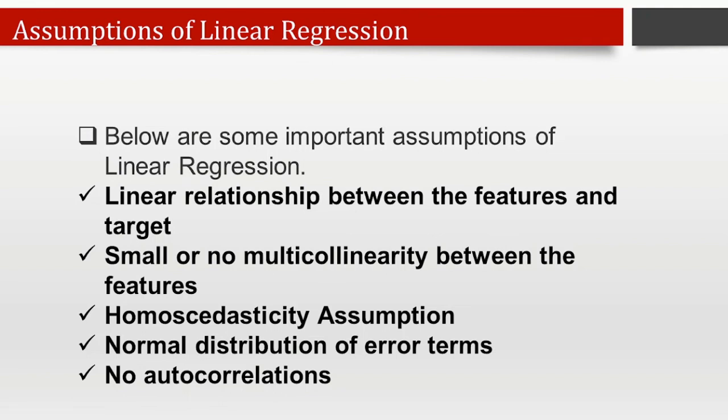Fifth, no autocorrelation: the linear regression model assumes no correlation in the error term. If there is any correlation in the error term, it will drastically reduce the accuracy of the model. Autocorrelation usually occurs if there is a dependency between the residual errors.